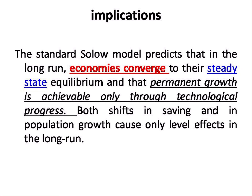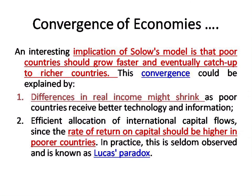Rich countries have a higher saving rate than poor countries, and rich countries have a lower population growth rate compared to poor countries. There are a few implications attached to this model. First, in the long run, economies converge to a steady-state equilibrium. Convergence of economies is an interesting implication — poor countries grow faster and eventually catch up with rich countries.